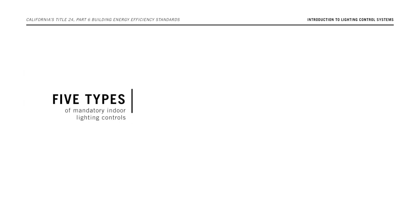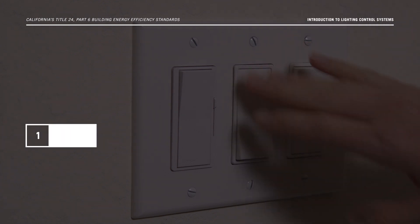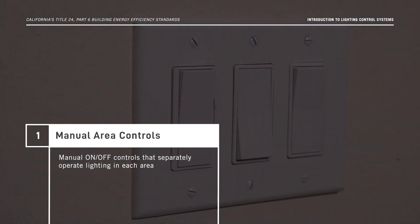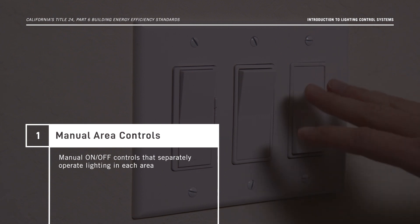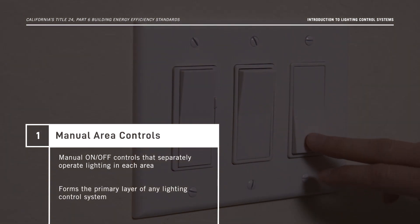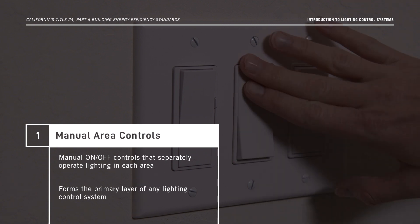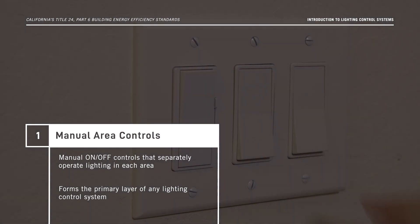Now we'll tell you about the five types of mandatory indoor lighting controls, and we'll review the control interactions required under the Energy Code. Starting with manual area controls — they're manual on-off controls that separately operate lighting in each area. An area is any space with ceiling height partitions or walls. These controls form the primary layer of any lighting control system and have been required under the Energy Code since its inception in 1978.